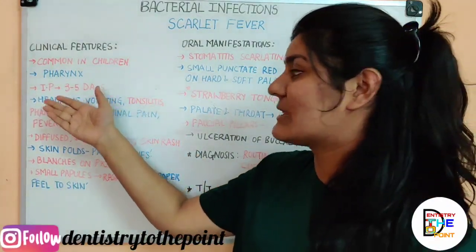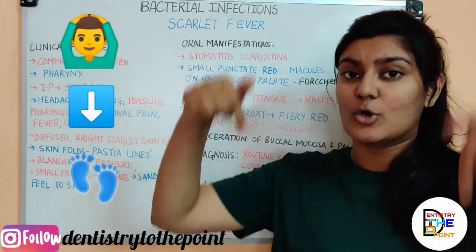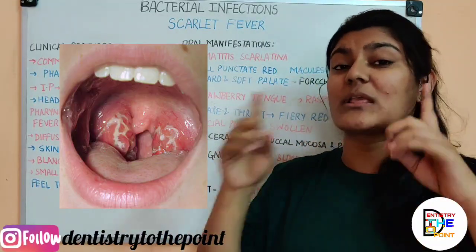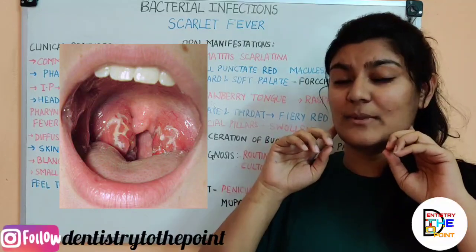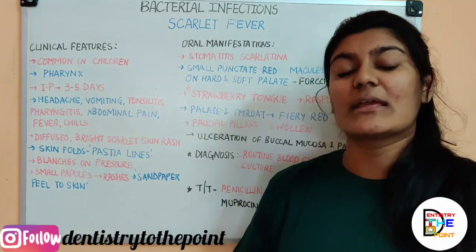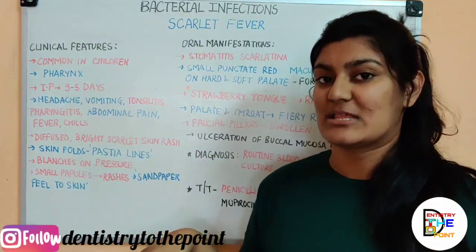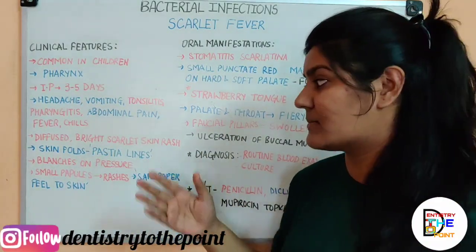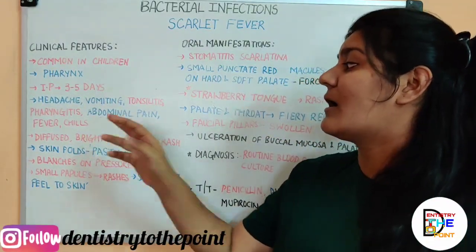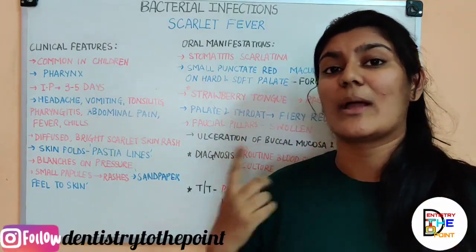When we talk about symptoms, we always go head to toe. First of all, headache, then vomiting, tonsillitis with inflammation, pharyngitis, then abdominal pain, and then whole body fever and chills. These are the clinical signs and symptoms. Also characteristically, there can be enlargement and tenderness of the surrounding cervical lymph nodes.